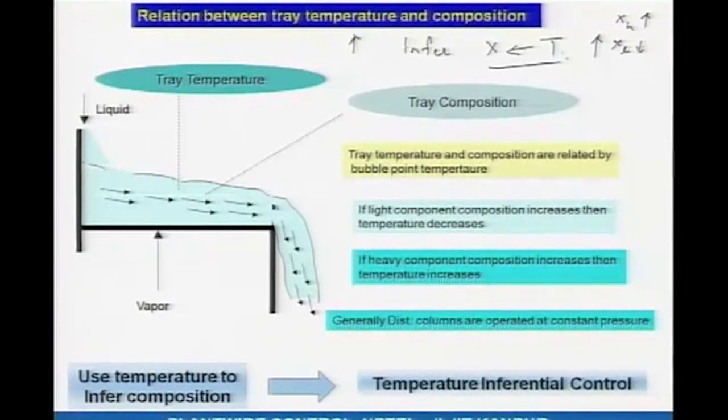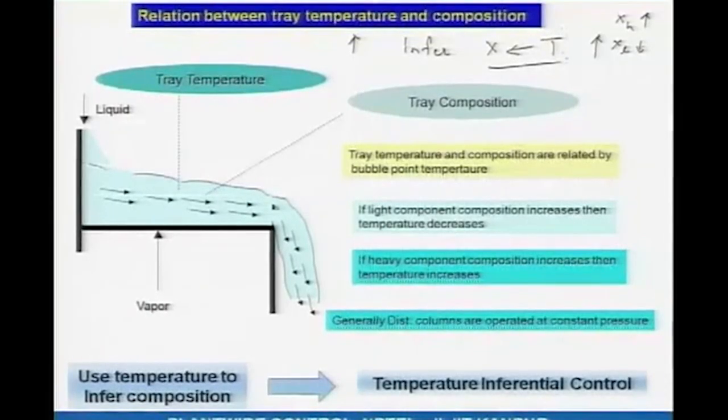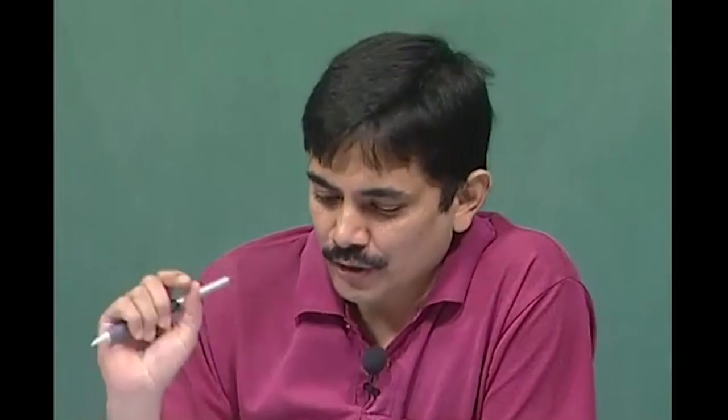Because composition measurement is quite cumbersome, you need a measurement of temperature that would indicate composition indirectly. Temperature measurement comes in really handy — most columns infer composition from temperature. If on a tray the composition of the heavy component is increasing, you would expect the boiling temperature of that liquid to go up. Similarly, if the composition of the light component is decreasing, the boiling temperature will go down. So if the temperature is increasing, that indicates either composition of a heavy component is increasing or composition of a light component is decreasing.